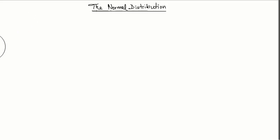Hello everyone, welcome to Actuary on Path. This is a lesson on the normal distribution. The normal distribution, which is also known as the Gaussian distribution, is among the most widely used distribution functions. This is mainly due to the central limit theorem, which we will cover in a separate lesson.